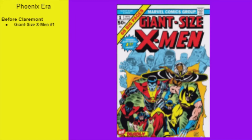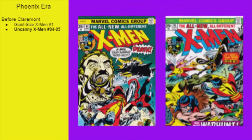This era actually starts right before Claremont takes over, with Giant-Size X-Men number 1 by Len Wein, which sees Charles Xavier assembling a new X-Men team of Wolverine, Storm, Colossus, Nightcrawler, Thunderbird, and Banshee to rescue the original X-Men led by Cyclops. After that, the next chronological series is the main X-Men book with issues 94 and 95, which sees the old X-Men quit and Thunderbird be killed in battle.